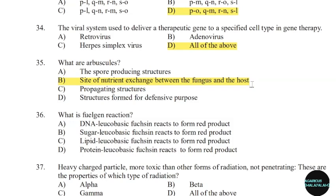36th question: What is the Feulgen reaction? Correct answer: Option A — DNA leucobasic fuchsin reacts to form a red product.